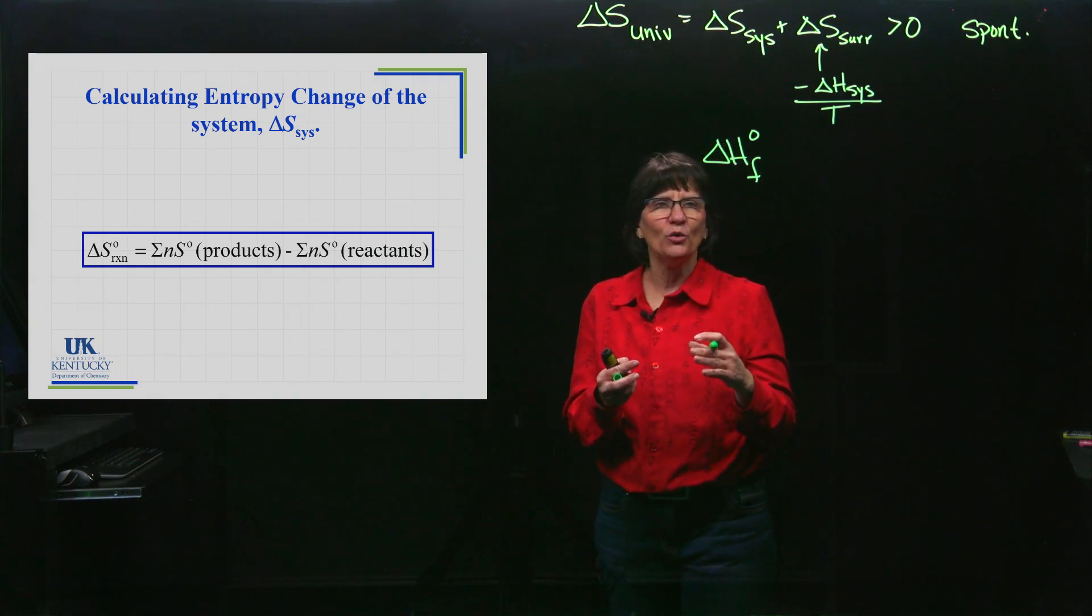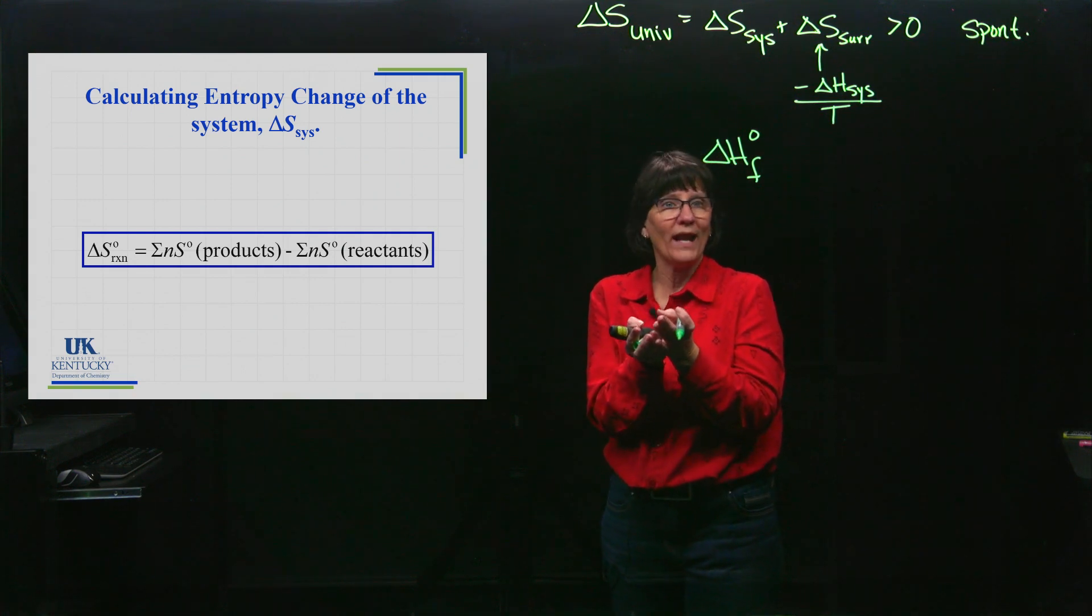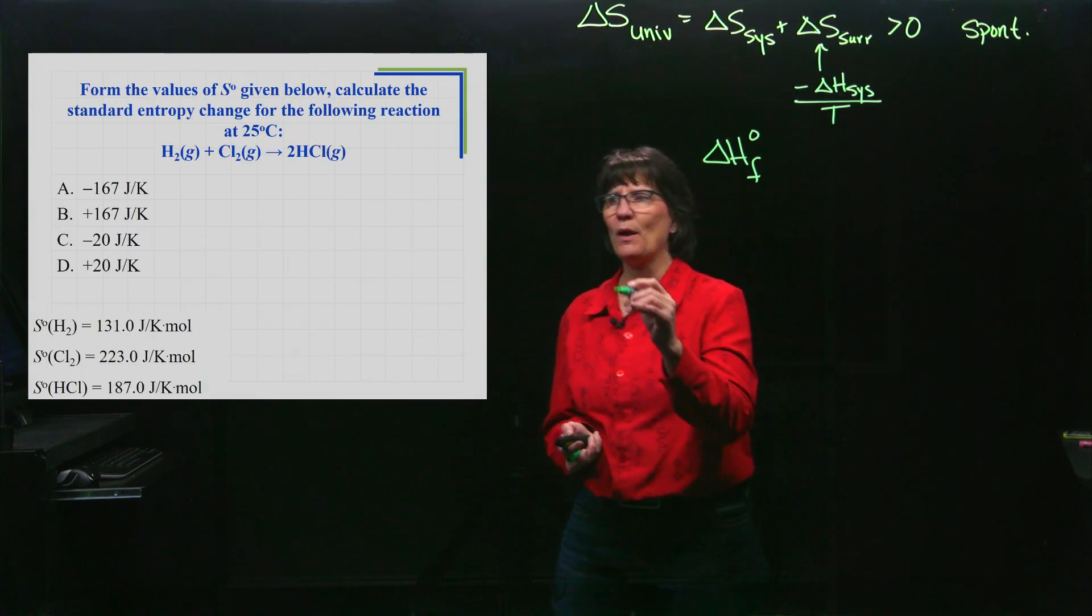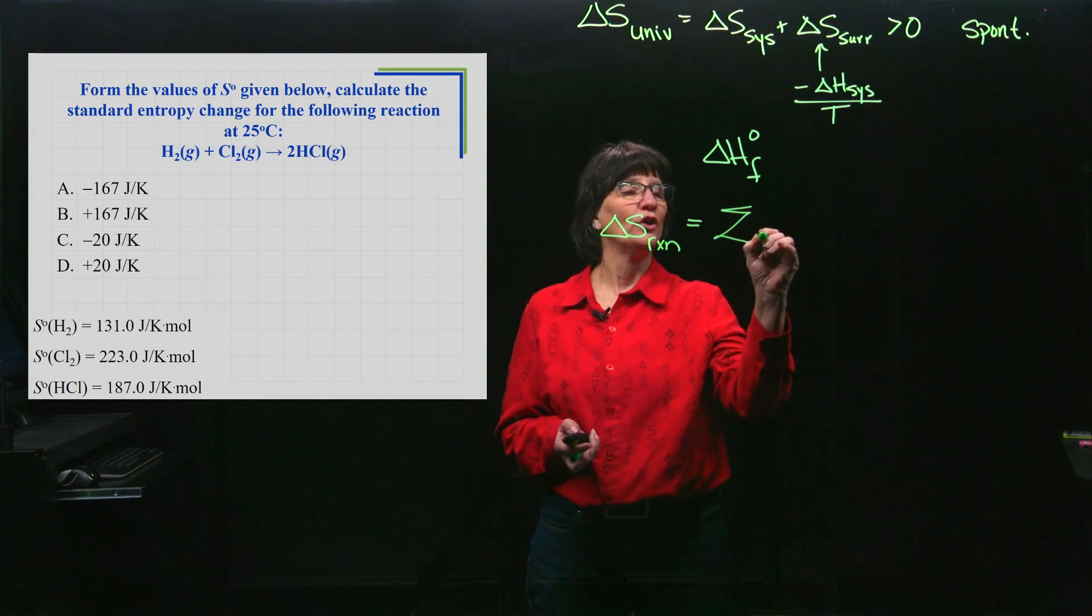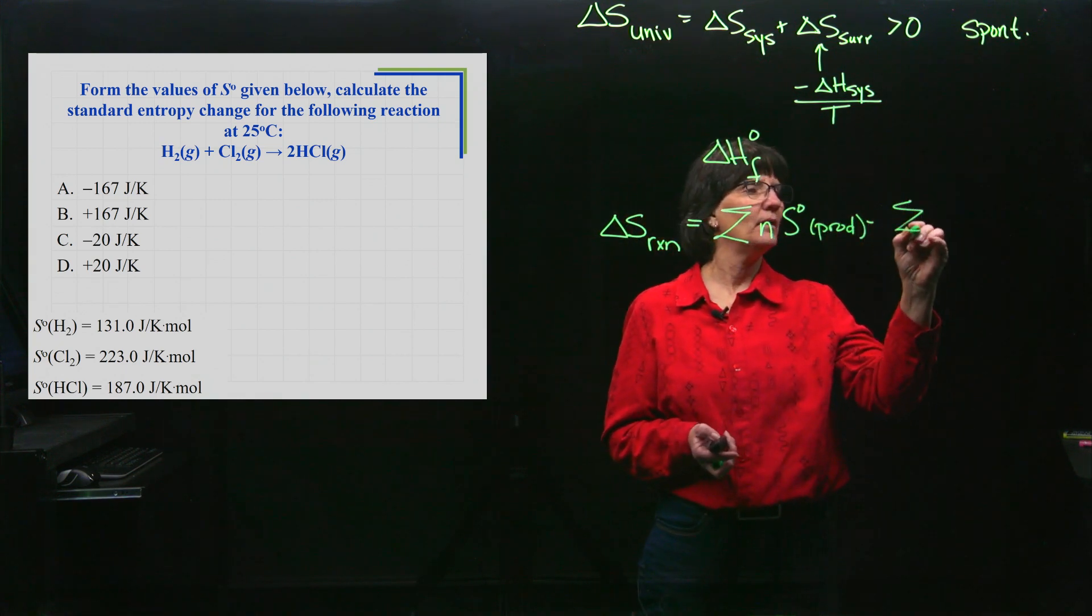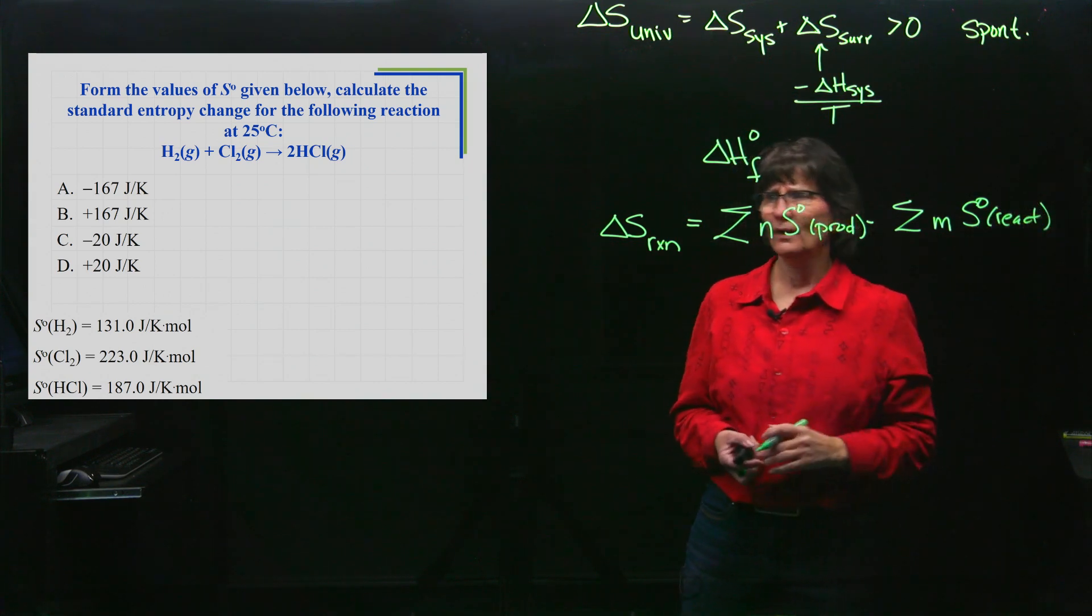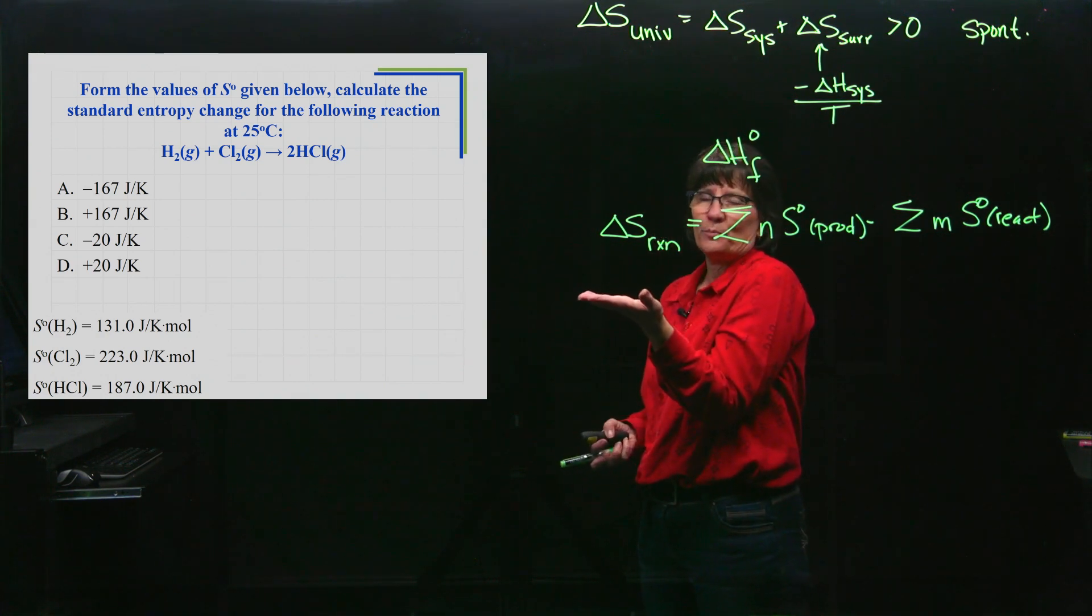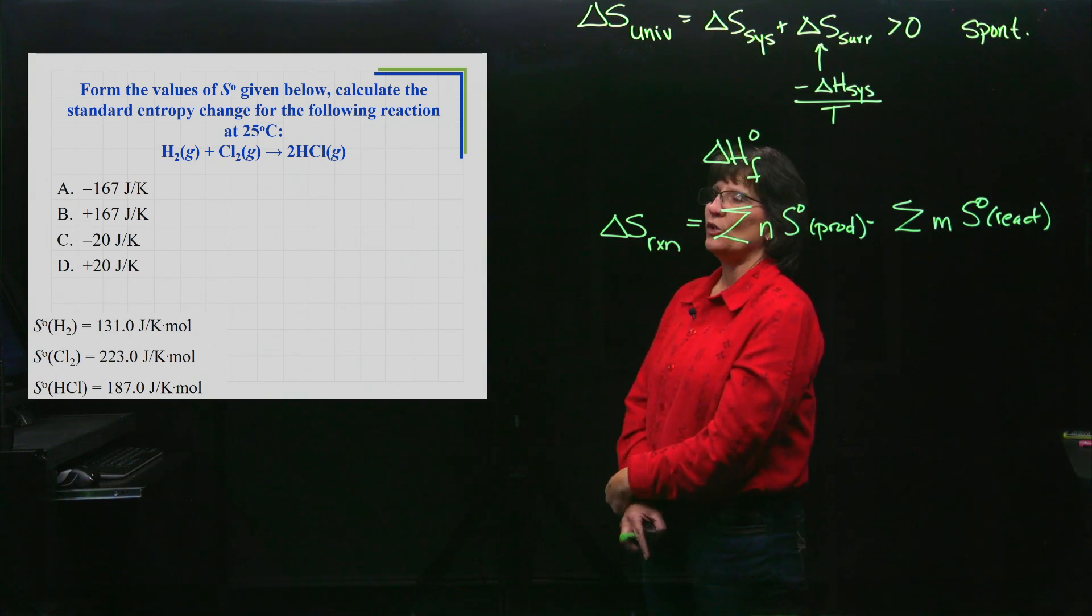You would also see a little F for formation. In the equivalent equation, we had ΔH of formations that we looked up, and we did products minus reactants. But we don't have to talk about a specific formation reaction and delta values. We can just go to tables, and if you look up the table and see a value for a substance at 25 degrees Celsius at one atmosphere (gas) and one molar (solution), this is its value.